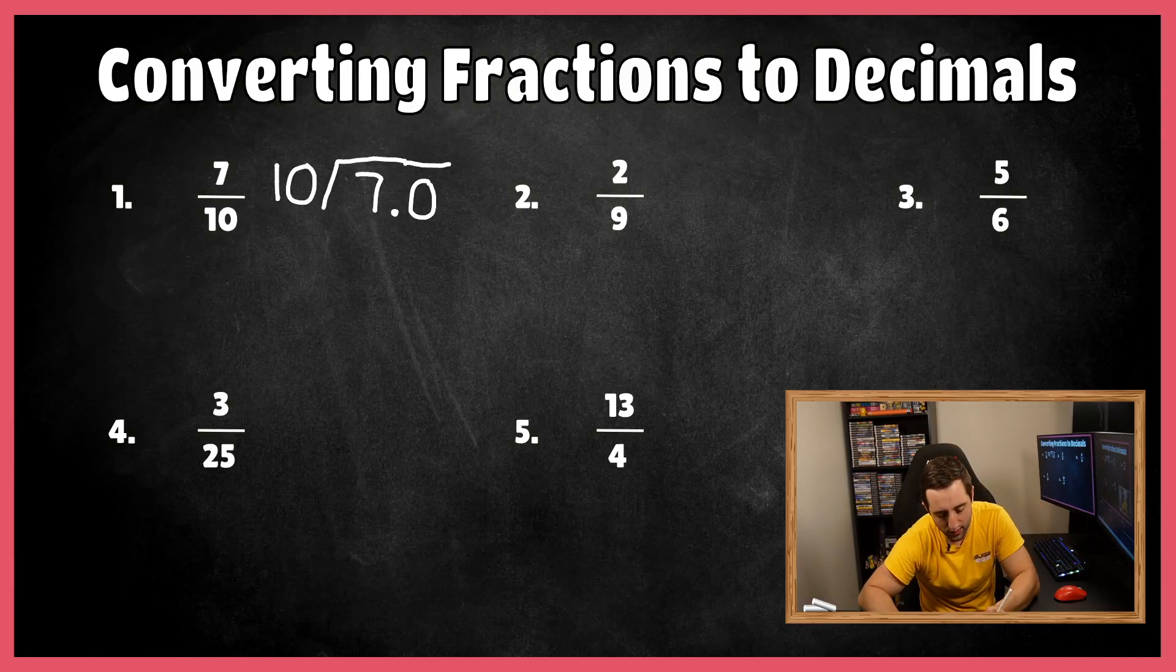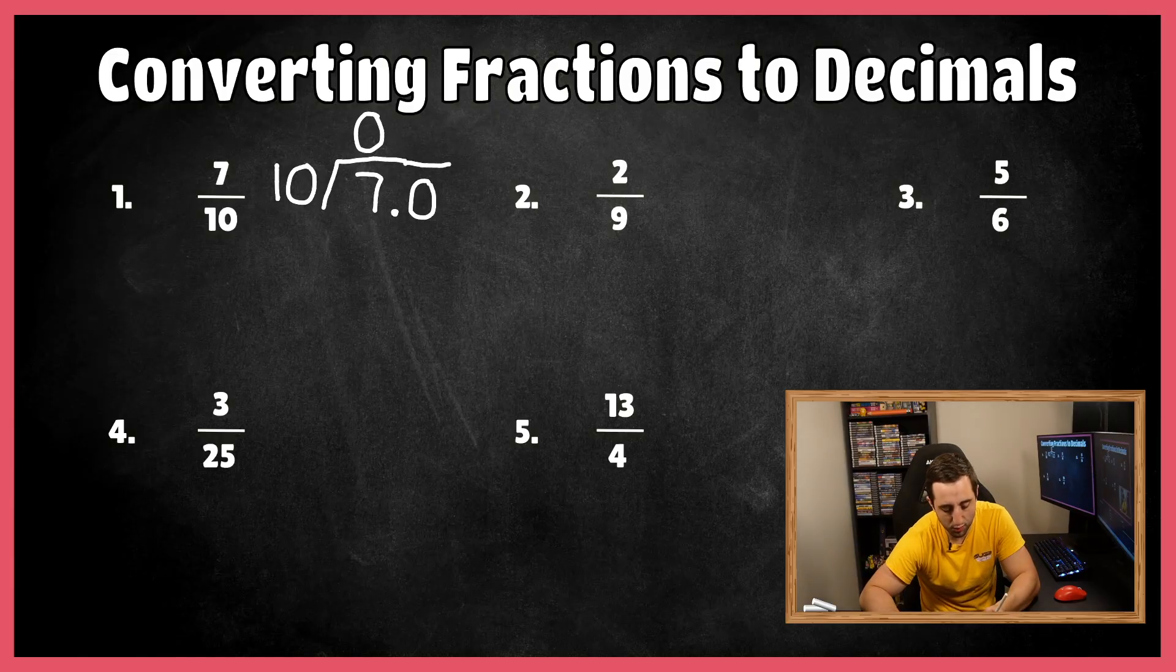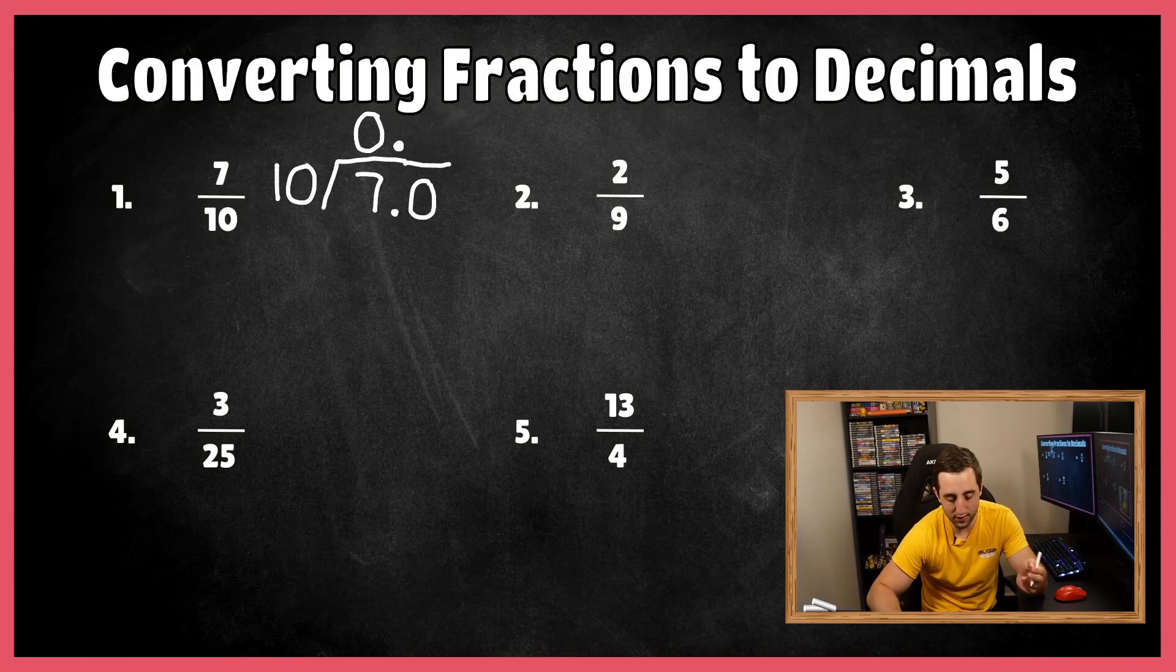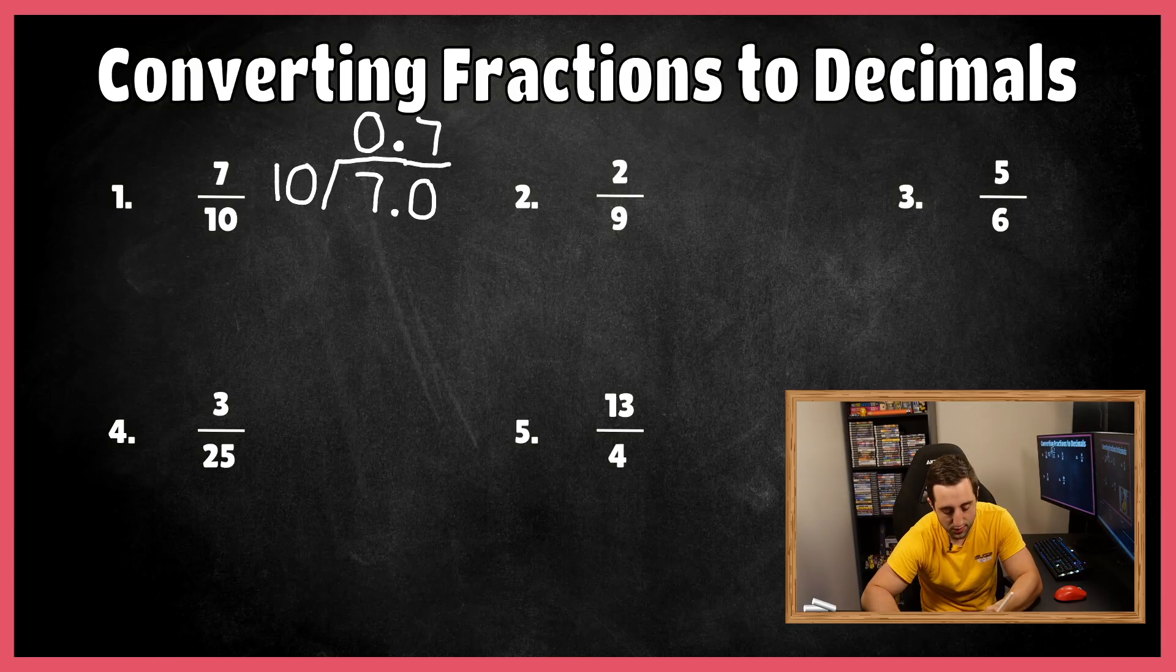So how many times does 10 go into 7? Well, it doesn't, so I'm going to write a 0 here. And then this decimal point is going to be brought up into my final answer, which is also known as the quotient. And now we can go ahead and figure out, well, how many times does 10 go into 70? Well, 10 fits into 70 perfectly seven times. So 10 times 7 is 70.